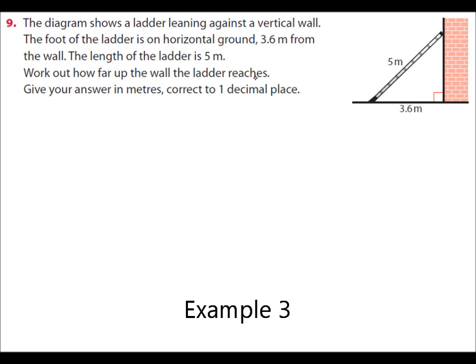Example 3. This looks like a real-life type example. We're trying to find how high up the ladder is against the wall. So we'll call that side x. The largest side opposite the right angle is the side 5, the ladder itself.